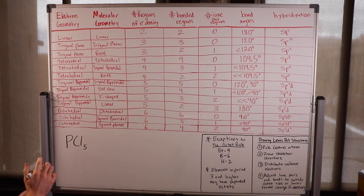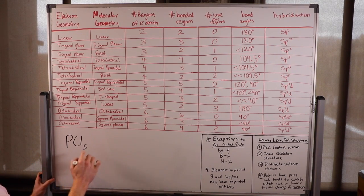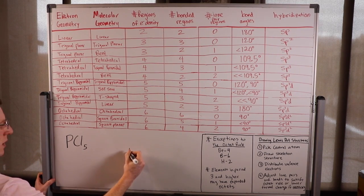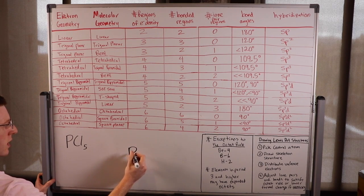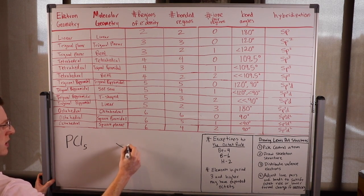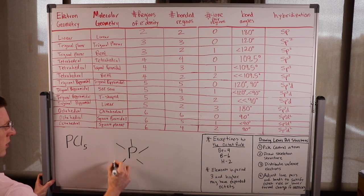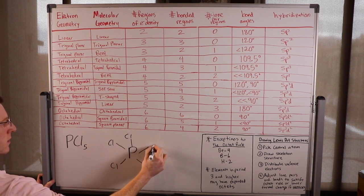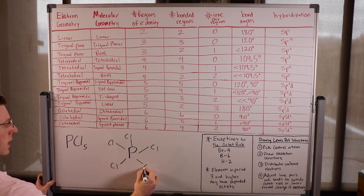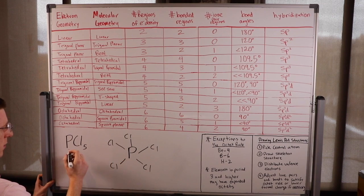The next molecule to draw is PCl5. I'll pick my central atom — that'll be phosphorus because there's only one — and then attach my outer atoms, all chlorines, and distribute my valence electrons.